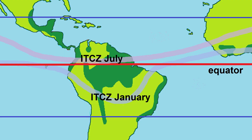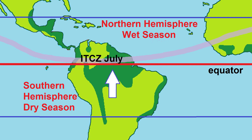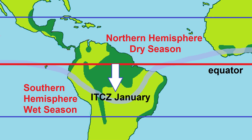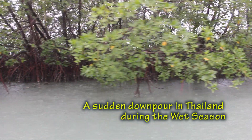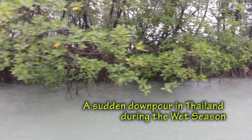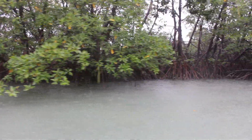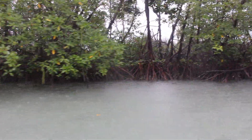The position of the ITCZ changes seasonally. It moves north in the northern hemisphere summer and south in the northern hemisphere winter. This is what is responsible for the wet and dry seasons in tropical regions.